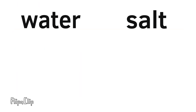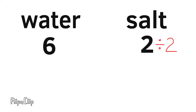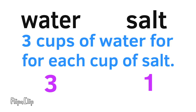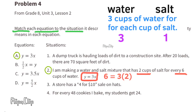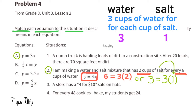There are 6 cups of water and 2 cups of salt. Dividing both by 2 gives 1 cup of salt and 3 cups of water, meaning there are 3 cups of water for each cup of salt. In equation A, y represents the amount of water and x represents the number of cups of salt. When x = 2, 3 × 2 = 6 cups of water; when x = 1, 1 × 3 = 3 cups of water.